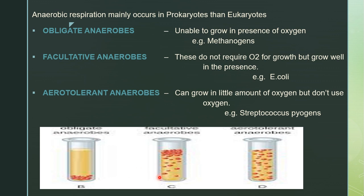Facultative anaerobes carry out aerobic respiration if oxygen is present, but switch to an alternate electron transport carrier under anaerobic conditions. They can grow in both the absence and presence of oxygen, but grow best in the presence of oxygen. Aerotolerant anaerobes can tolerate oxygen and grow in its presence in small amounts, but do not use oxygen. Example: Streptococcus pyogenes is aerotolerant; E. coli is facultative anaerobic; methanogens are obligate anaerobes requiring completely anaerobic conditions.